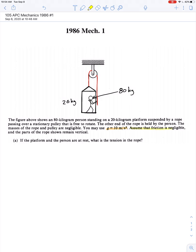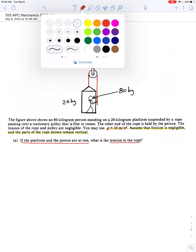And then we're also given a couple of assumptions. Assume that friction is negligible and that all of the rope segments remain vertical. In other words, as he pulls on it, he doesn't put an angle in the rope. So part one, the platform and the person are at rest. What's the tension in the rope? Seems straightforward enough.